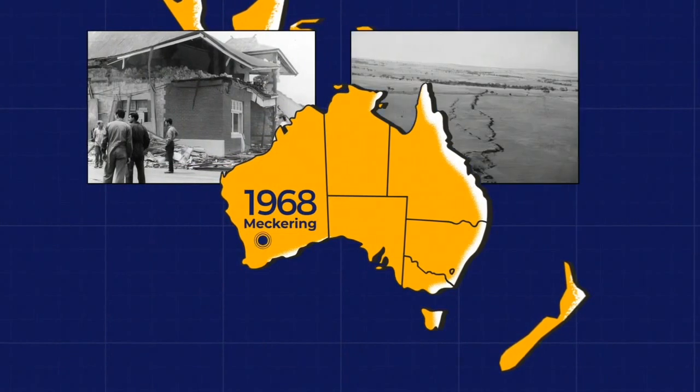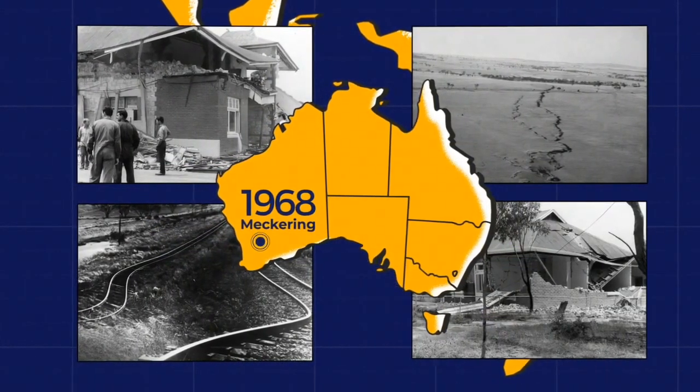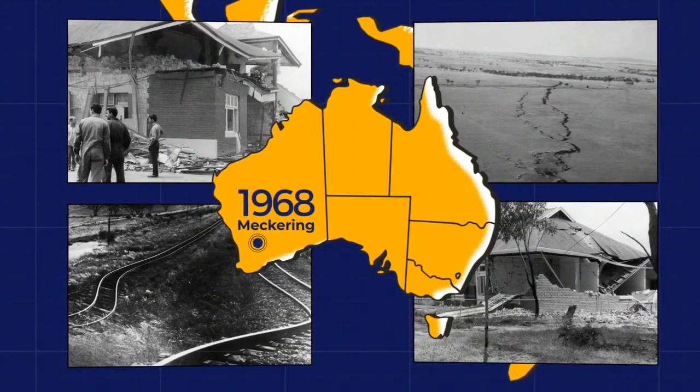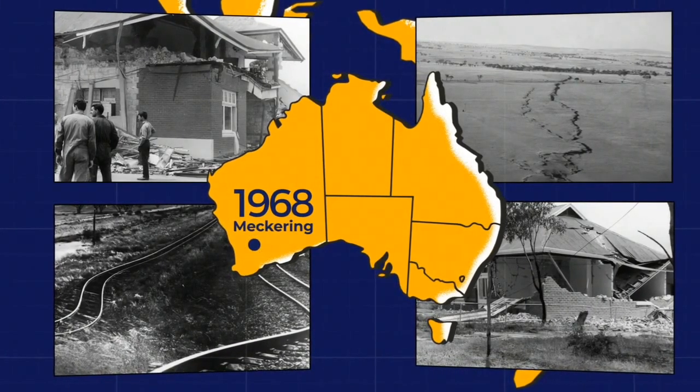This is what caused the 1968 Meckering earthquake that happened in Western Australia that has a magnitude of 6.8, which caused major damage in structures and infrastructures.